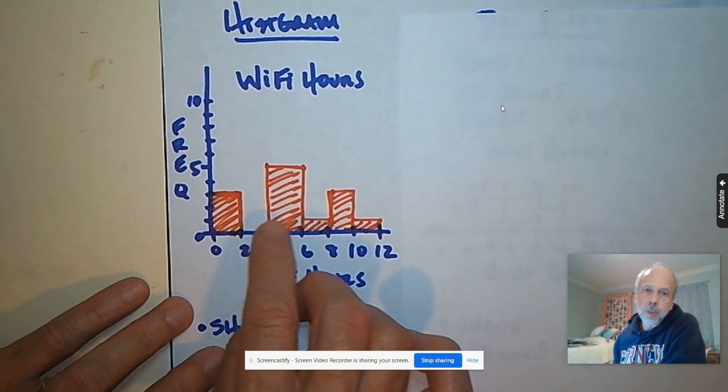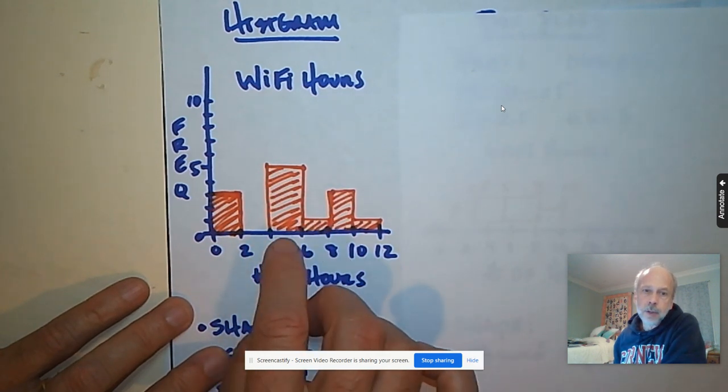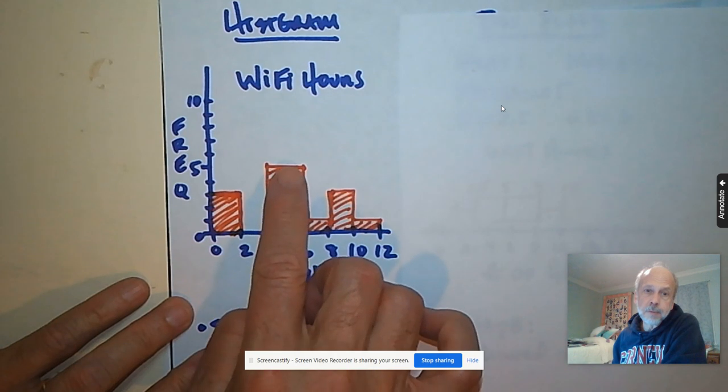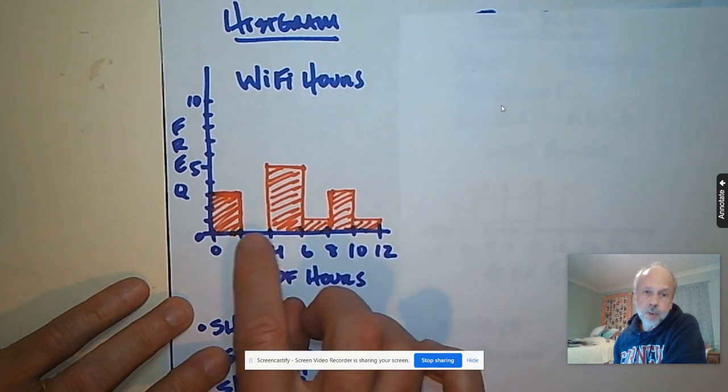And then we make our bars according to how many were in each category. For example, here, the four and five hour answers had a total of five people saying that. The 10 and 11 answers, that group just had one person saying it.